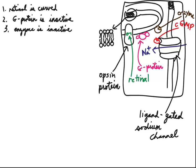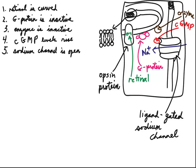Because the G protein is inactive, this enzyme is also inactive. When the G protein is activated, that's what turns the enzyme on. But in the dark, since the G protein is not activated, the enzyme is inactive. The enzyme, when active, breaks down cyclic GMP. But because in the dark it is not active, cyclic GMP levels rise and cyclic GMP can bind to the receptor site on this ligand-gated sodium channel, holding it open. So in the dark, the sodium channel will be open.